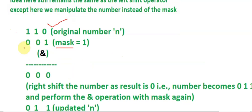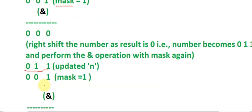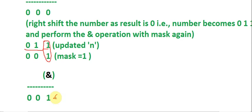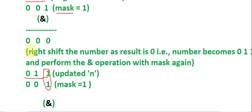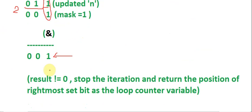For number six, the mask is one. On the first AND we get zero, so I right shift the number by one to get the updated n. Doing the AND again, the two ones give a non-zero result and we end the iteration. The result is the number of loop iterations, which is two — first and second iteration — so two is the final answer using the right shift method as well.